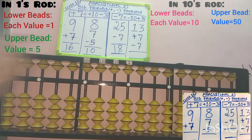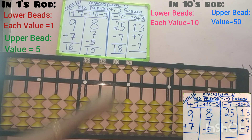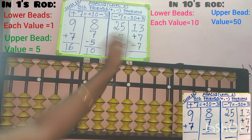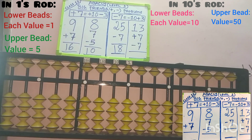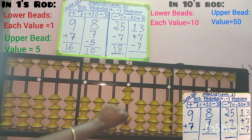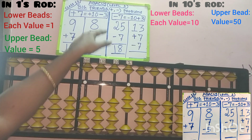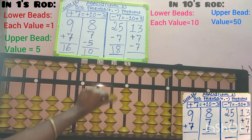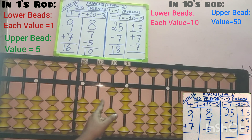Next, we will move to the last sum. Here we can see the difference between plus 7 and minus 7. First, add 13 — 3 is in the 1s place and 1 is in the 10s place. Add 3 in the 1s place: 1, 2, 3. And in the 10s place, 1 bead is added. So 13 is added.